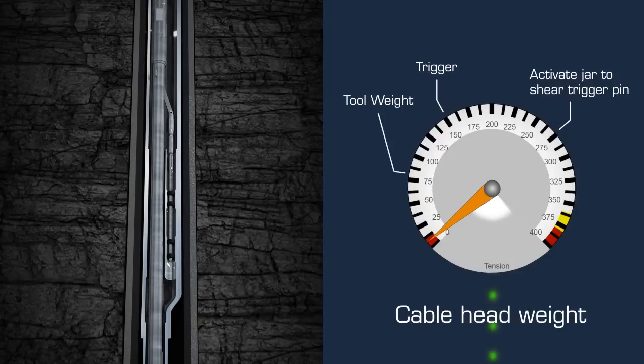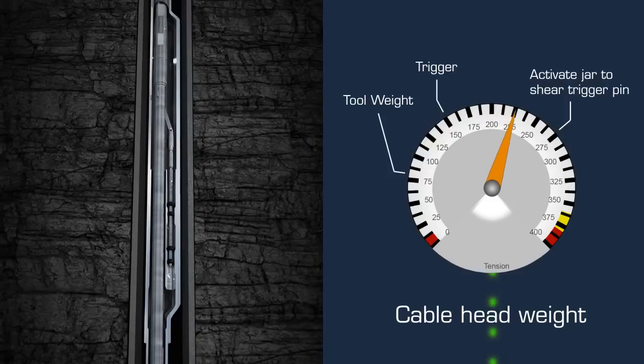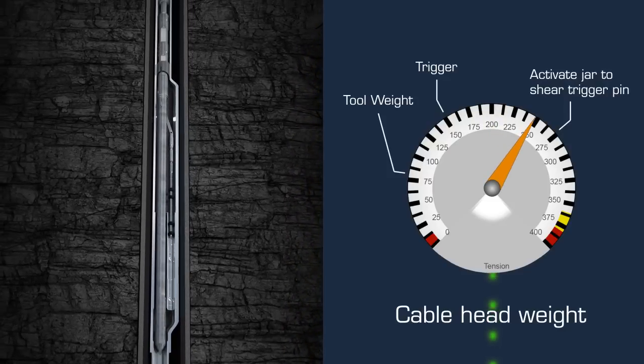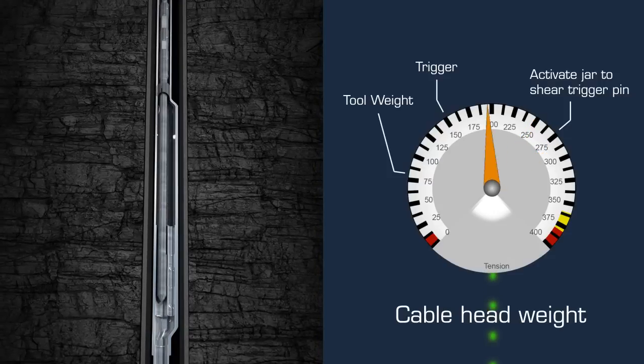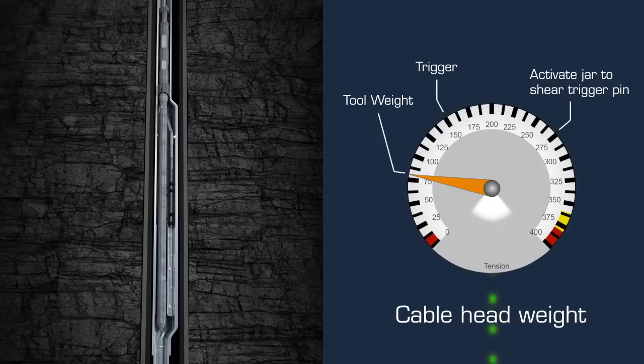The connection to the gas lift valve is confirmed by a gentle pull. Jarring up releases the valve and shears the trigger pin. The gas lift valve is now free and is pulled out of the hole. A new valve is run and installed.